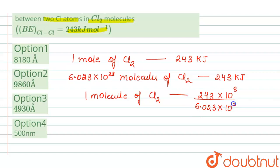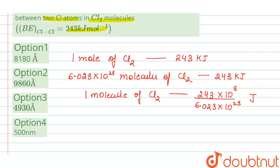So it will come in joules. This is the energy which is required to break the bond between two chlorine atoms for one molecule of chlorine. So we have to calculate the wavelength.